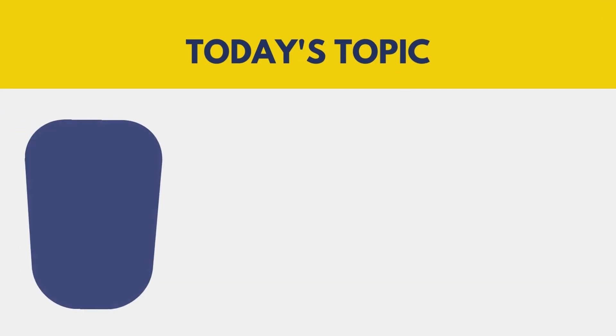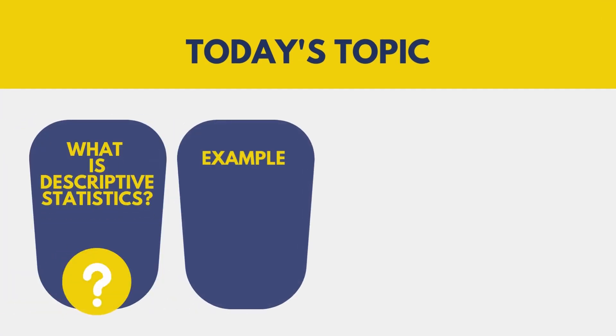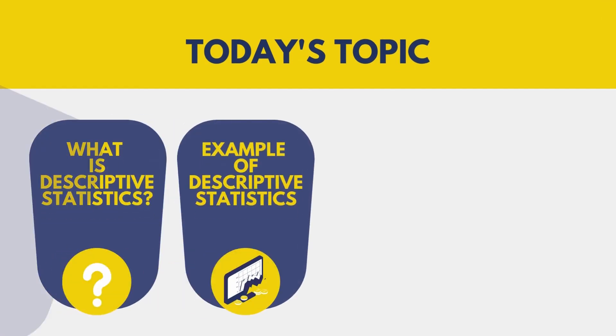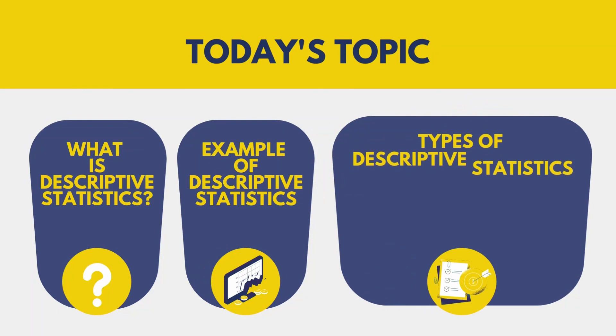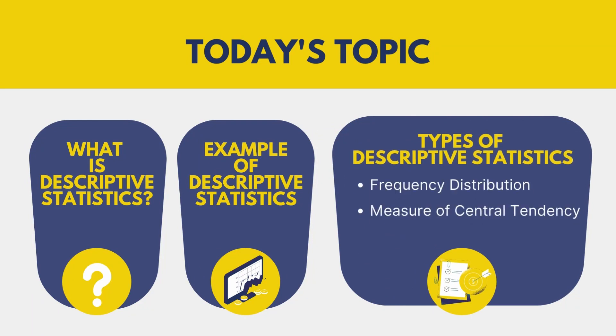Today we will be discussing what is descriptive statistics, examples, and three types of descriptive statistics: frequency distribution, the measure of central tendency, and the measure of variability.